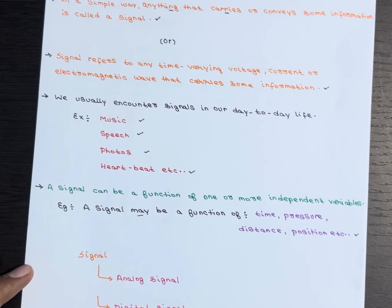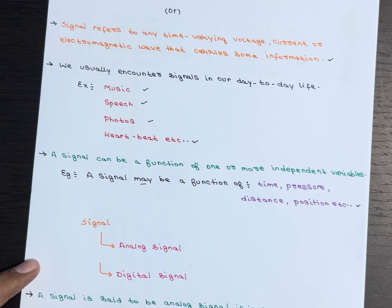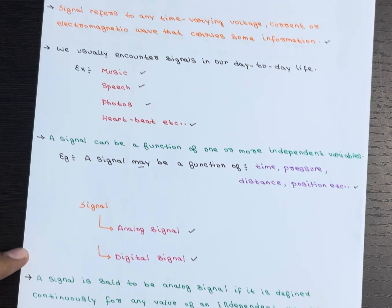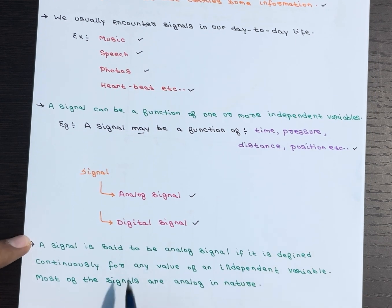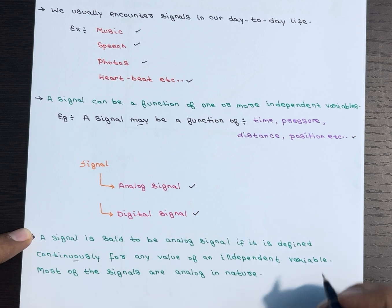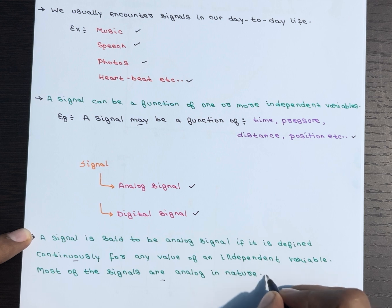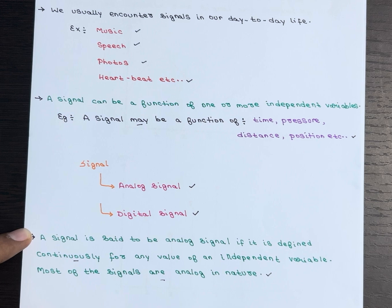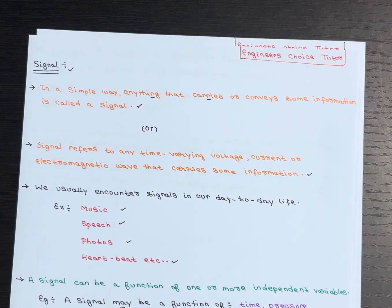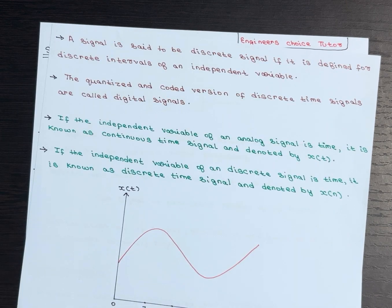Basically there are two types of signals: one is an analog signal and another one is a digital signal. A signal is said to be an analog signal if it is defined continuously for any value of an independent variable. Most of the signals are analog in nature — that is our definition for an analog signal.